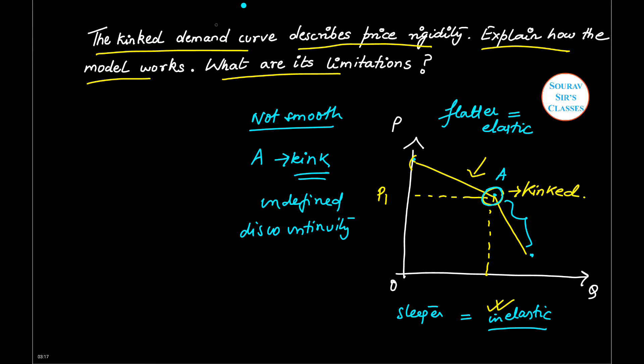Now we will talk about the kinked demand curve and how it describes price rigidity. According to this model, each firm will face a demand curve that is kinked at the currently prevailing price, say P1 for our diagram. If the firm will raise its price, it will be elastic or inelastic, but the question is why. So this will be the explanation.